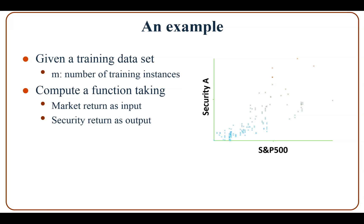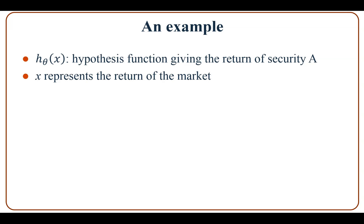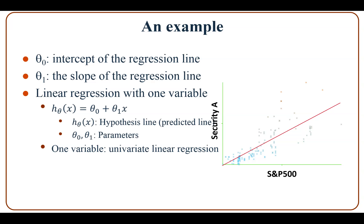Now let's look at an example. Given a training dataset with m training instances, there are market returns of S&P 500 and the security return. The task is to compute a function that takes the market return as input and the security return as the output. We call h of x, parameterized by theta, the hypothesis function giving the return of security A. Here x is the return of the market. The parameter theta_0 is the intercept of the regression line and theta_1 is the slope. This is the hypothesis function with one variable.